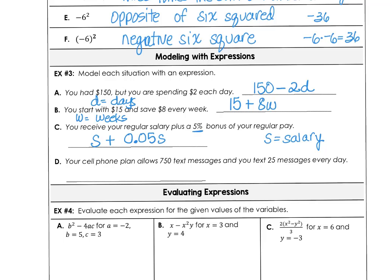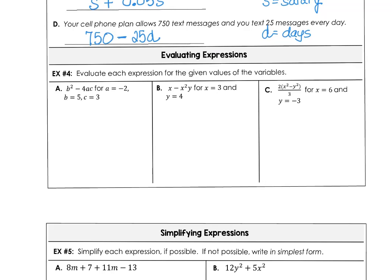And finally, in part D, your cell phone plan allows you 750 text messages, and you text 25 messages every day. So if we let the letter D stand for the number of days that you're sending a text message, and you text 25 messages every single day, but you're allowed 750, then you're going to subtract the 25 messages every day from your allowed amount.